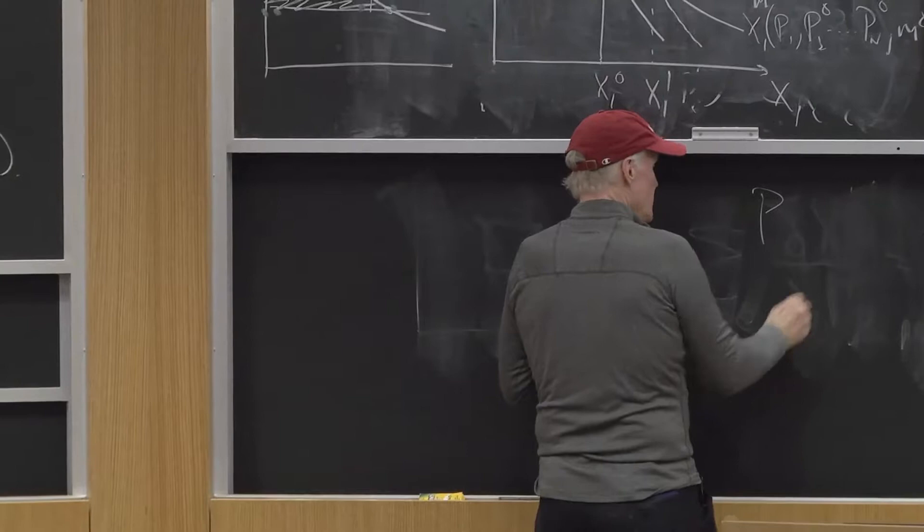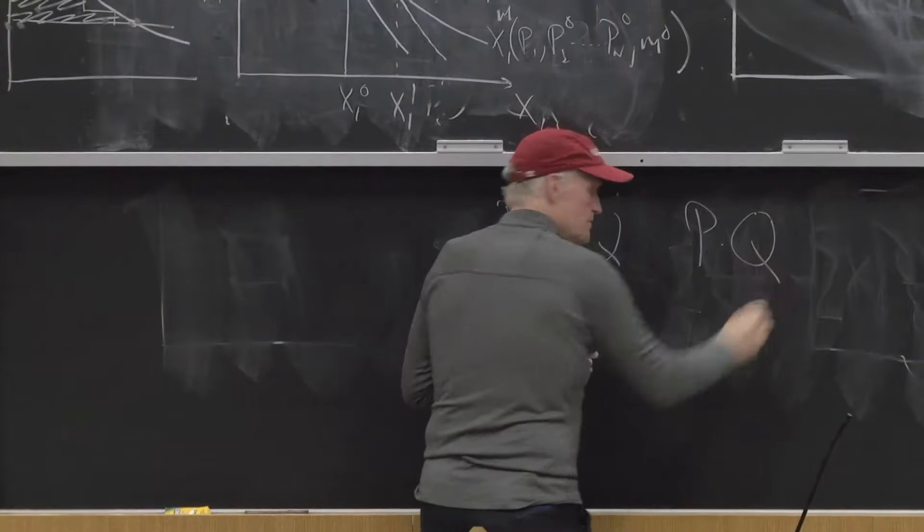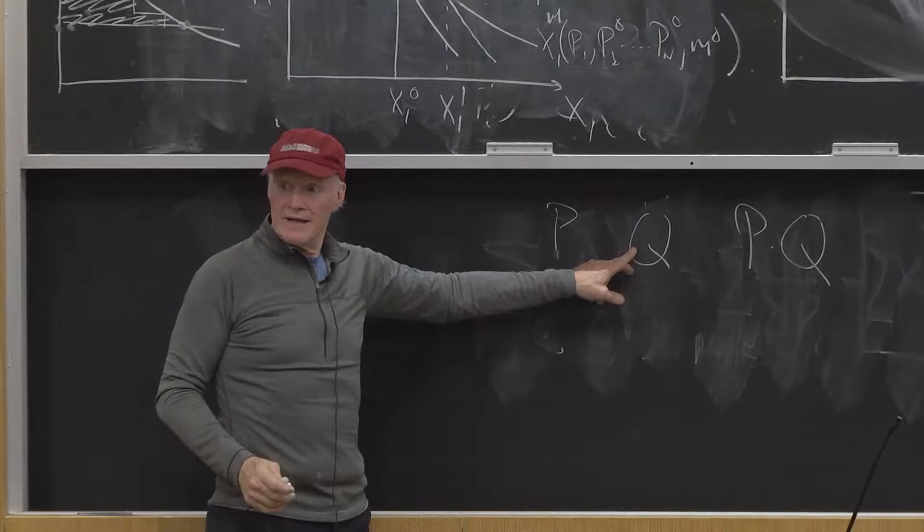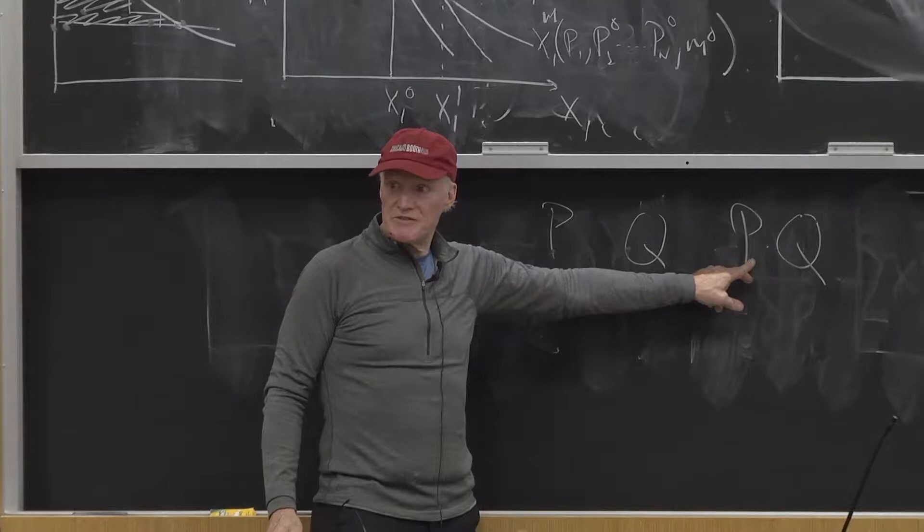Price, three concepts: P, Q, P times Q. Okay? Those are the three concepts you have in economics. This is called price, this is called quantity, this is called expenditure.